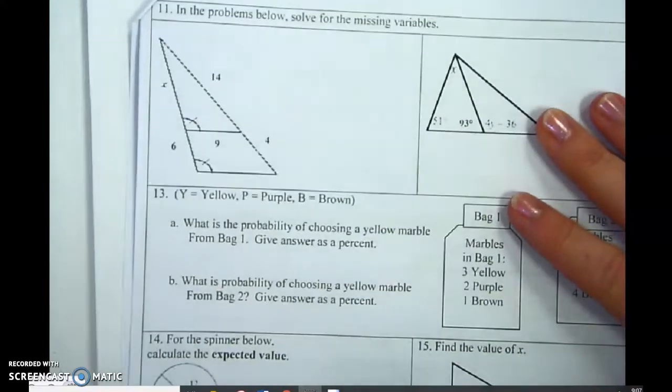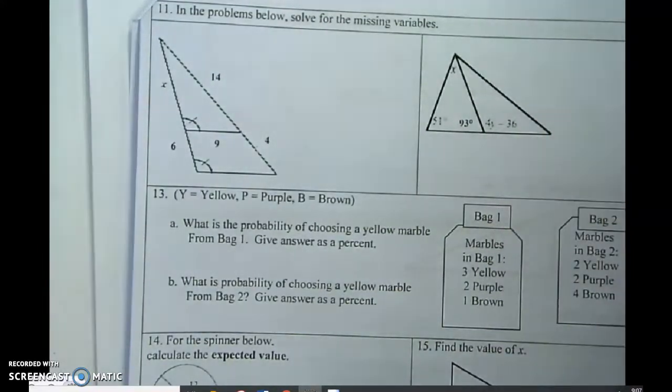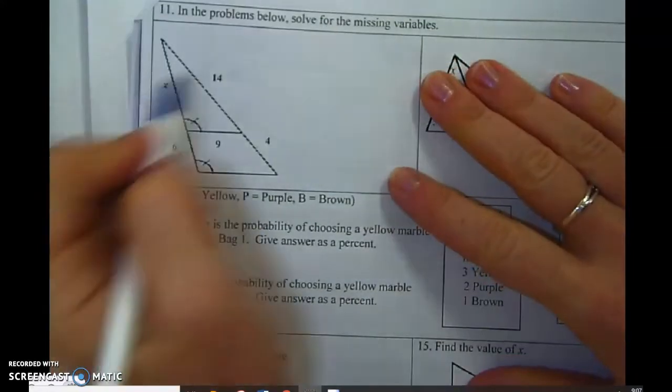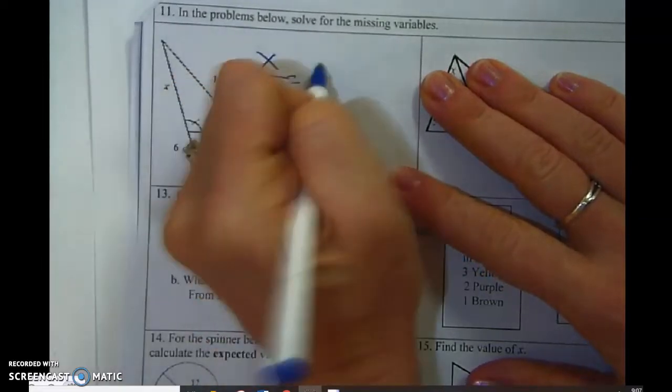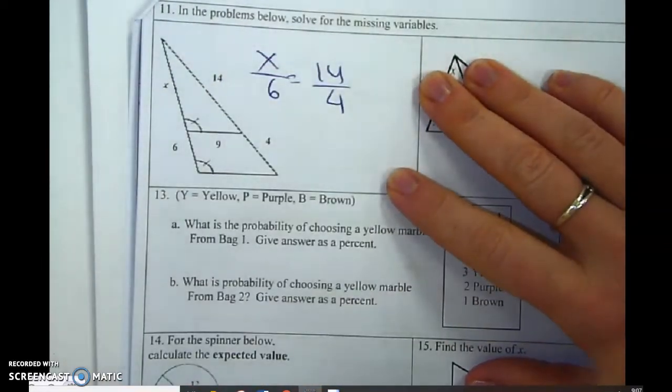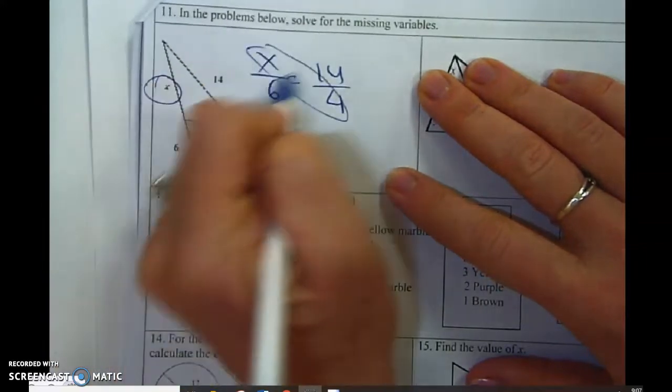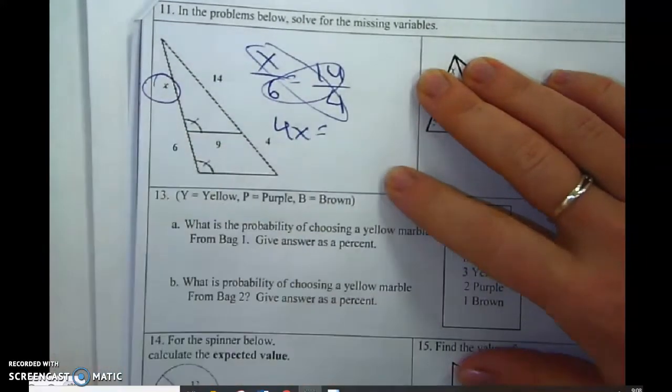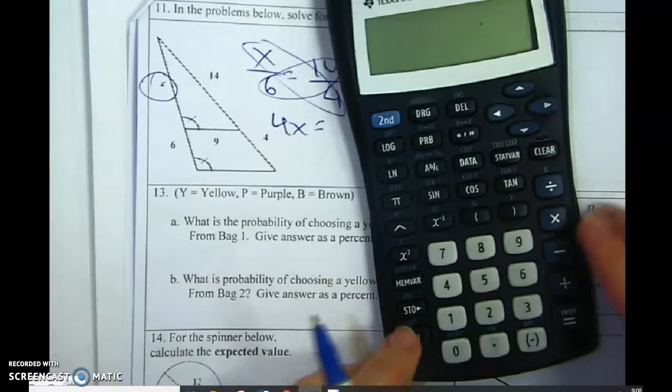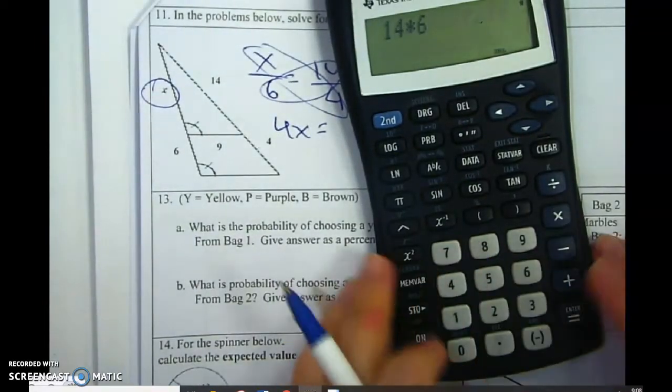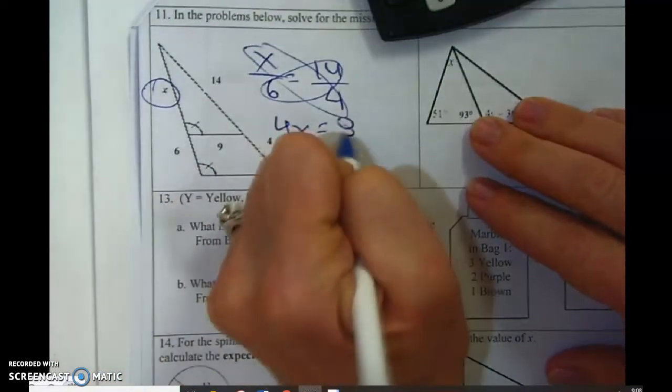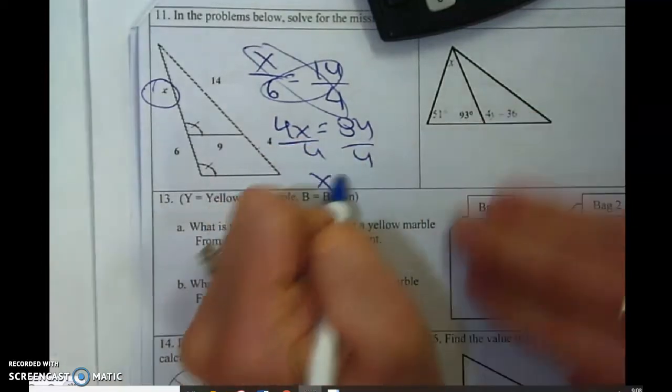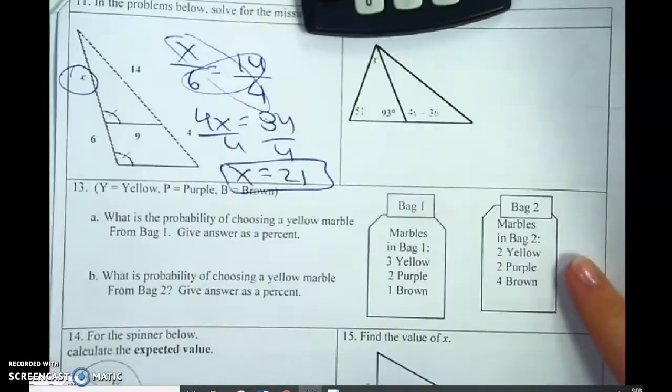They want you to solve a proportion to figure out what x is. So x over 6 equals 14 over 4. That's the x. Make an x, multiply what touches. 4x equals, let's go 14 times 6, 84 divided by 4. x equals 20.